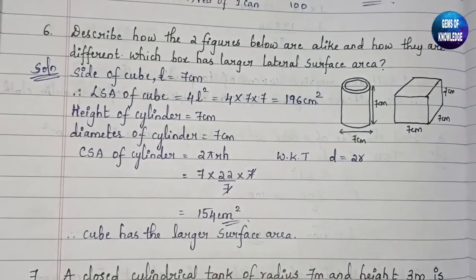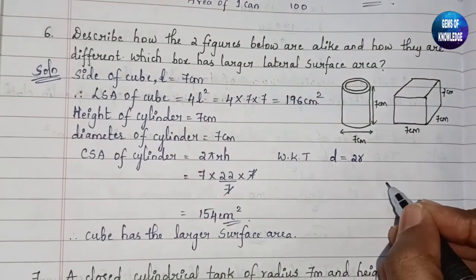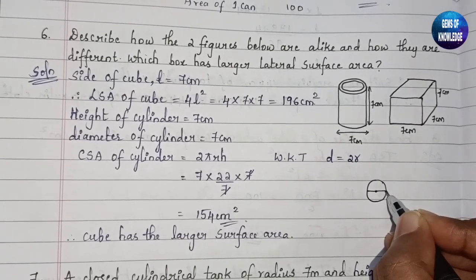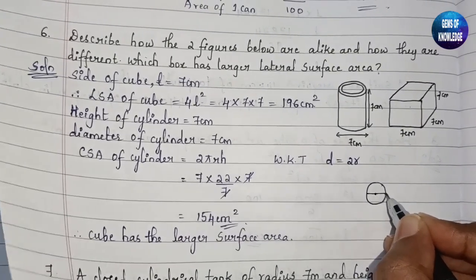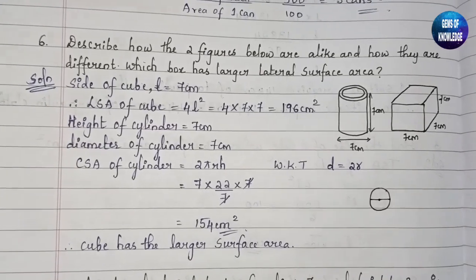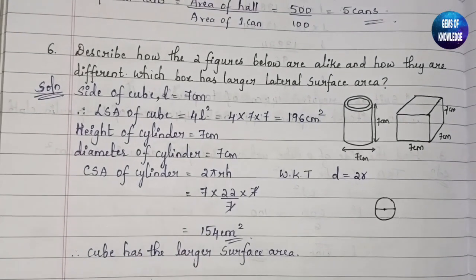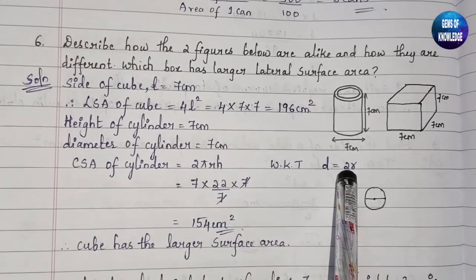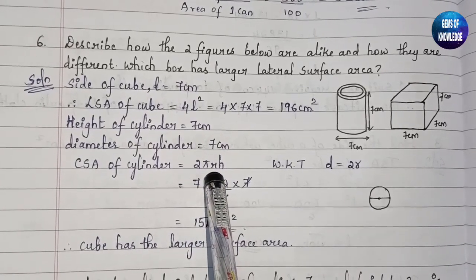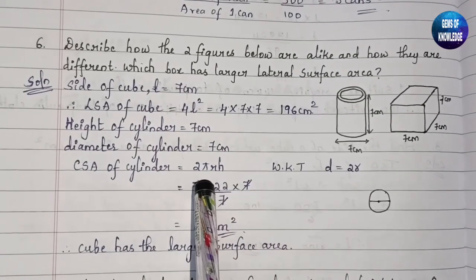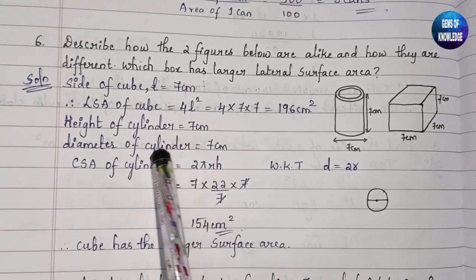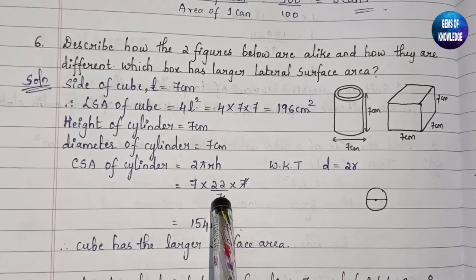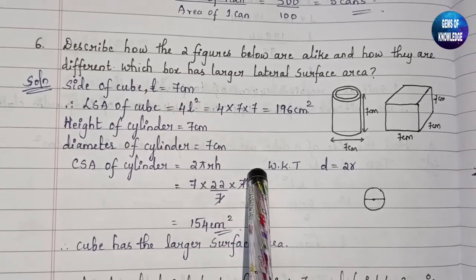Let me show you — if this is a circle with center, the diameter is the full line made up of two radii, one on each side. So diameter d = 2r. In the formula CSA = 2πrh, we can replace 2r with d = 7. So CSA = 7 × (22/7) × 7.